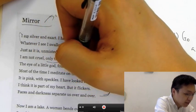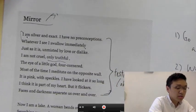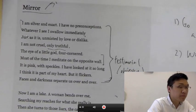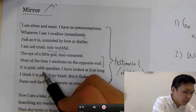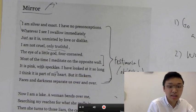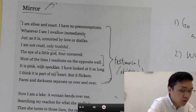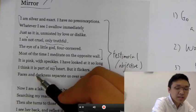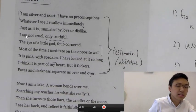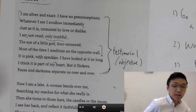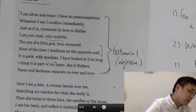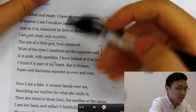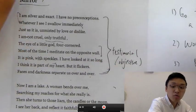Most of the time meditate on the opposite wall. So it's talking about how the mirror, this is reinforcing the setting. The mirror is located in a room every day, it faces an opposite wall, and it is pink with speckles. So the fact that it is with speckles may indicate that the wall is quite old, it is aging. But it flickers. Faces and darkness separate us over and over. This poem, this mirror has been in the room for an extended period of time. So it has went through many days and nights. That's why the darkness separates the wall of the mirror over and over again.